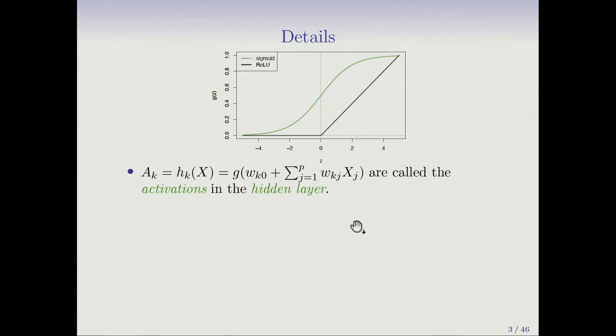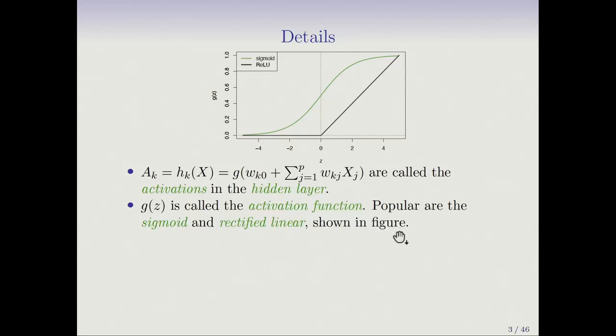Let's look in a little bit more detail. The AK, these are the activations. They're HK of X. We can think of it as a nonlinear transformation of a linear function. They're called activations in the hidden layer. These nonlinear functions, there's a choice, and they're called activation functions. Two that are popular are the sigmoid and the rectified linear. In the early neural networks, the sigmoids were popular. It's a nonlinear function that takes a standardized range—Z running from minus 4 to 4—and maps it to the interval 0 to 1 in a smooth transformation. It's the same transformation used in logistic regression.